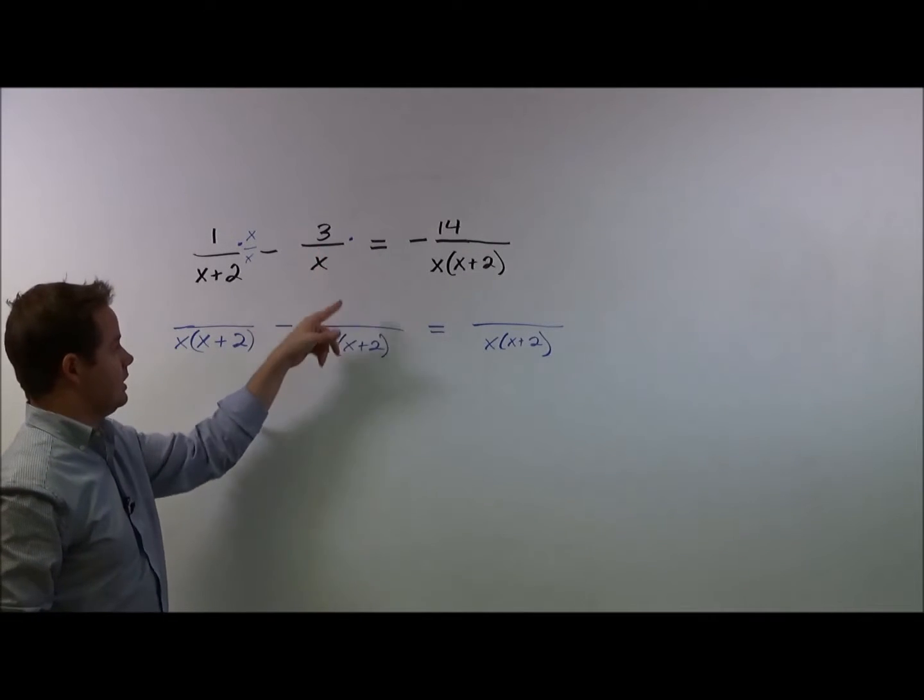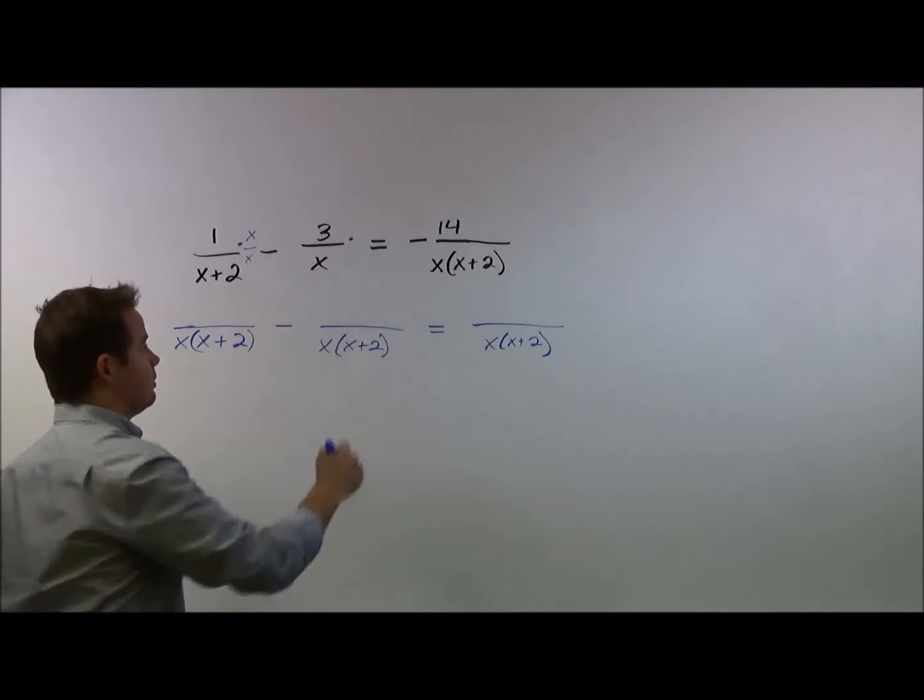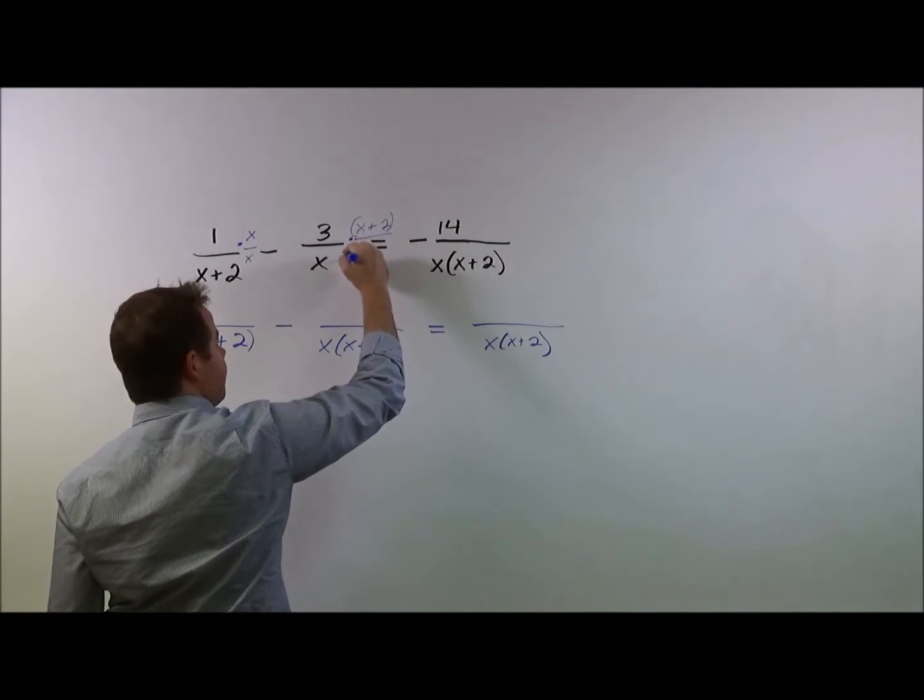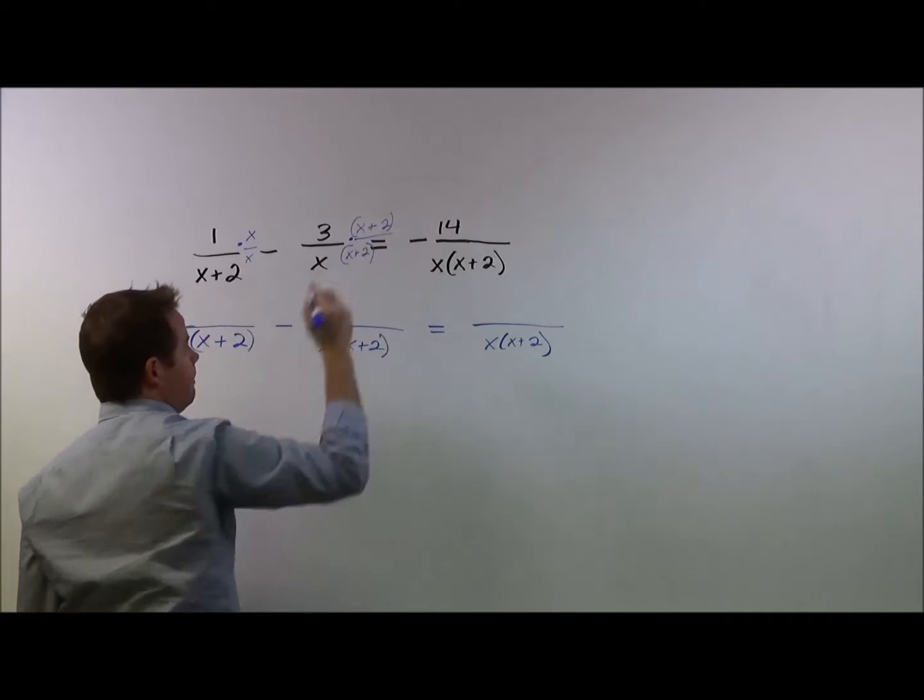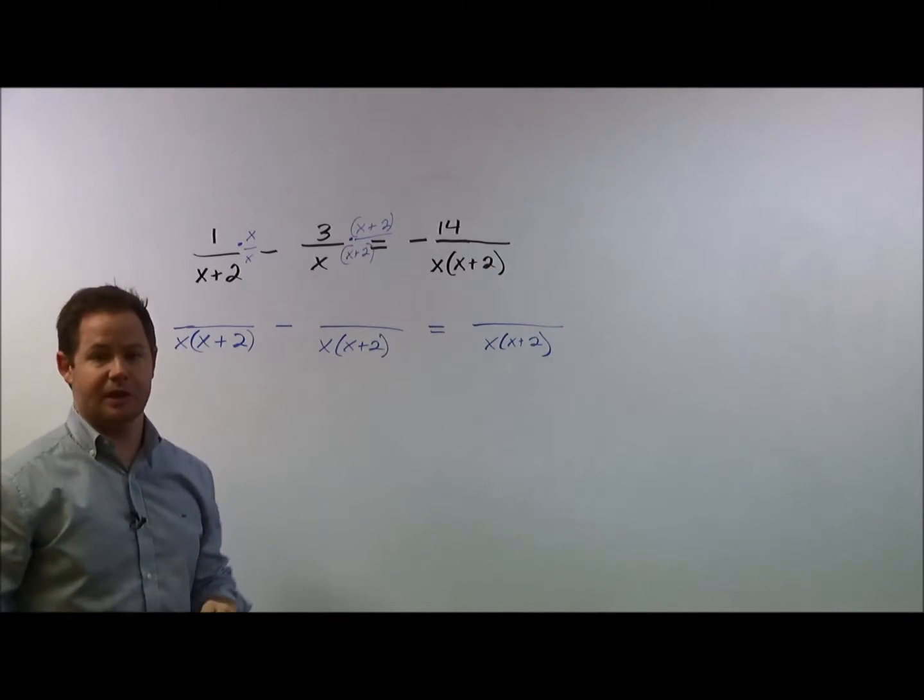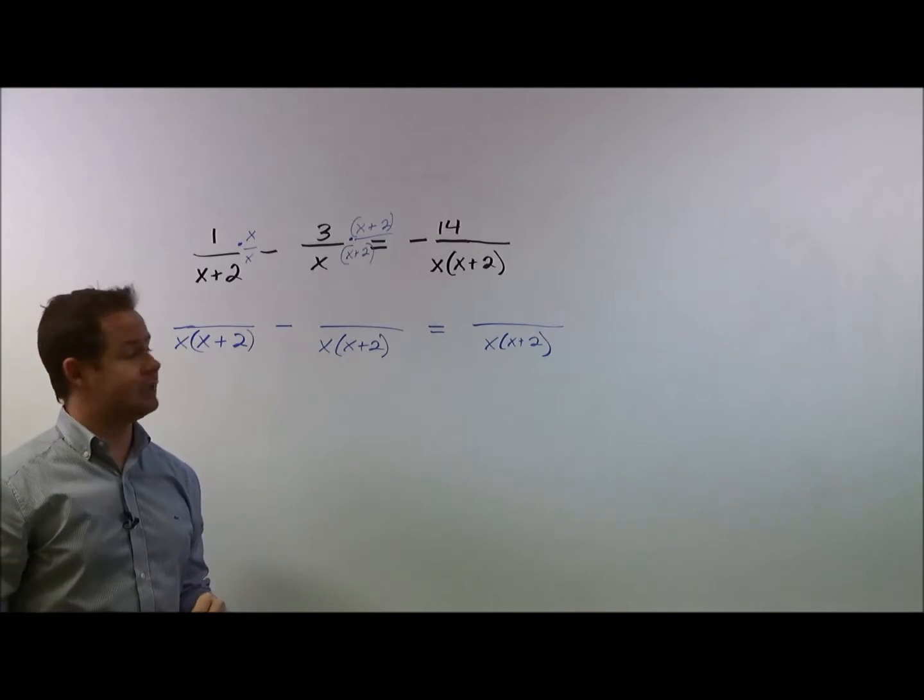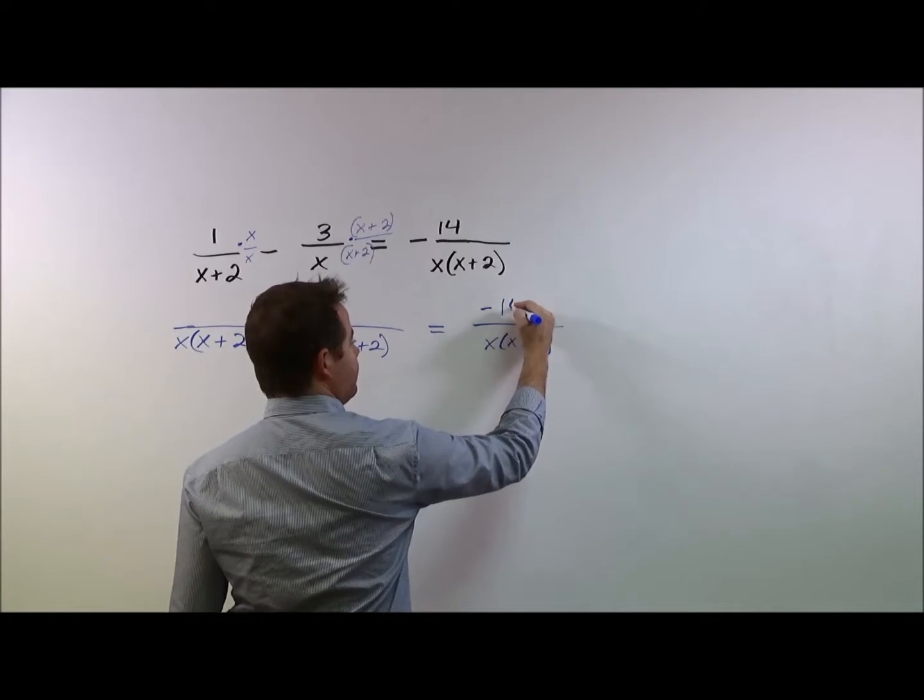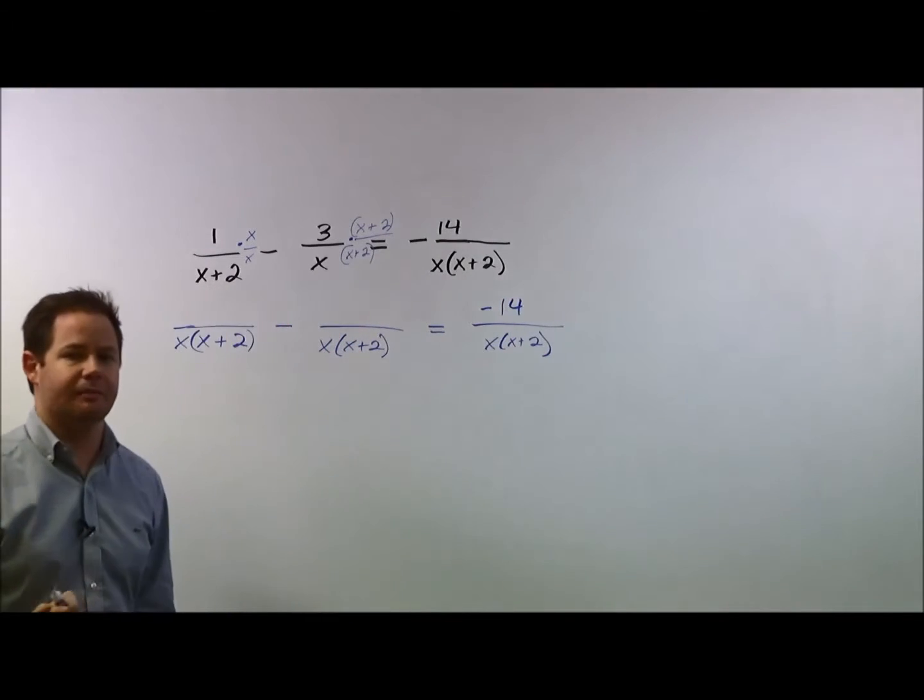Here we were missing an x plus 2. So we're really multiplying the top and the bottom times x plus 2. And here, luckily, we're all set with our common denominator. We don't have to multiply by anything, so the easiest thing to do there is just go ahead and bring that one down and write in the negative 14 to make that part easy.